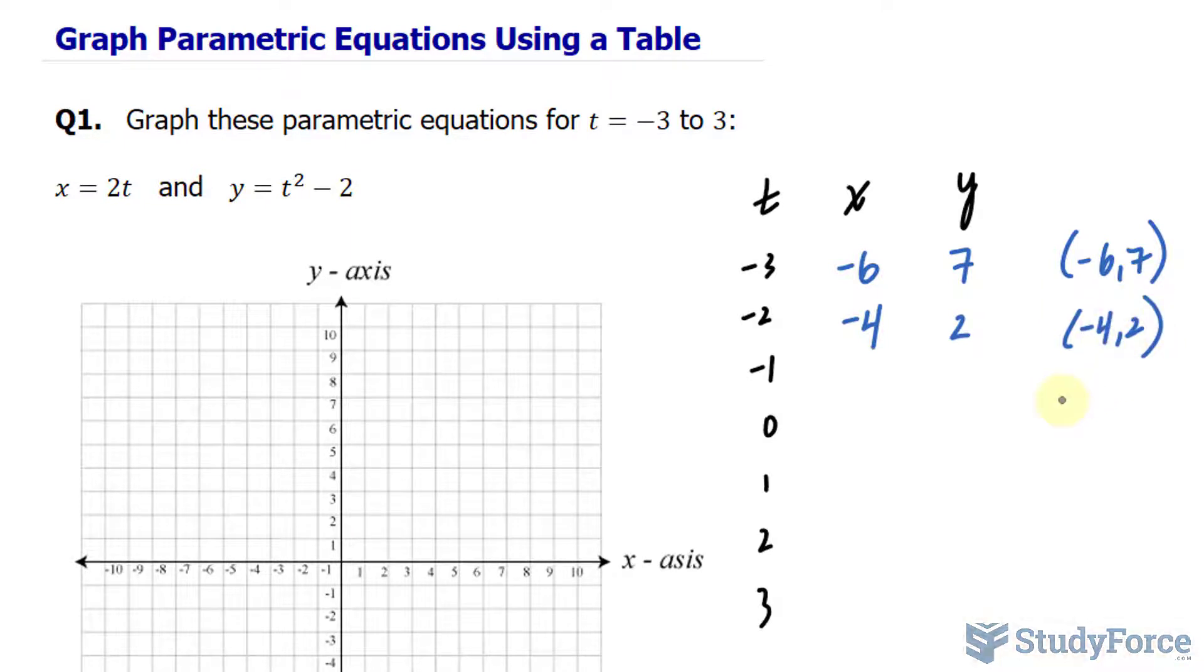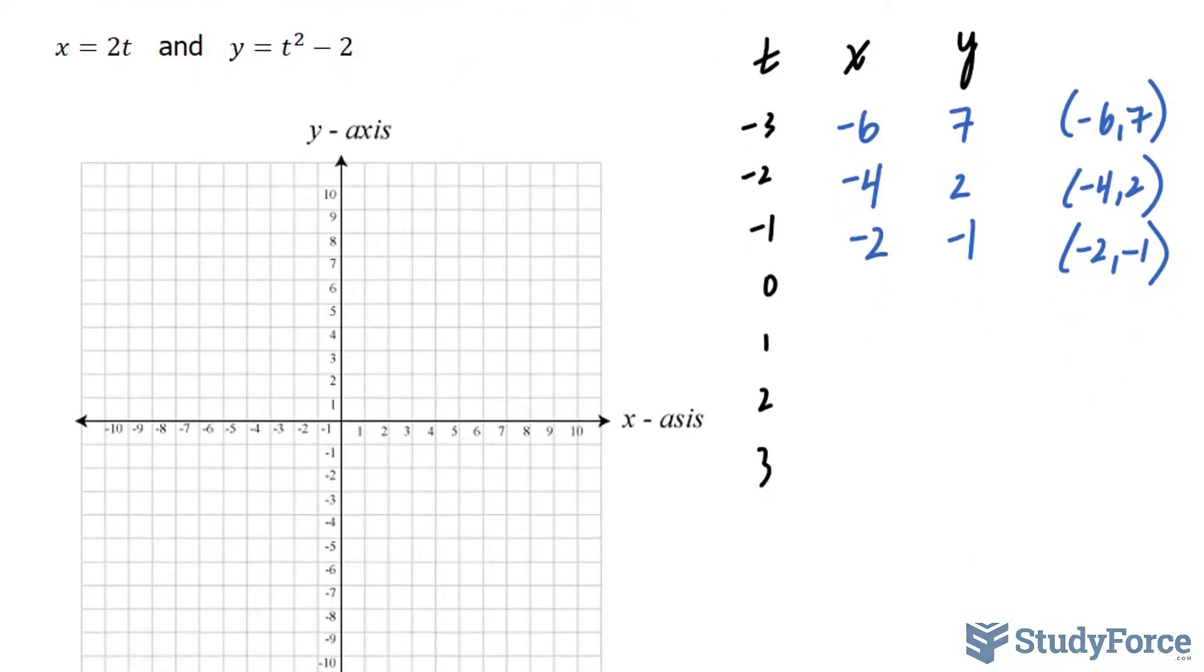Let's do one more for good measure. Substituting negative 1 into there gives us negative 2. And negative 1 into here makes it negative 1. So we'll have a third point at negative 2 and negative 1. The rest of the points, if you do it correctly, should look like this.